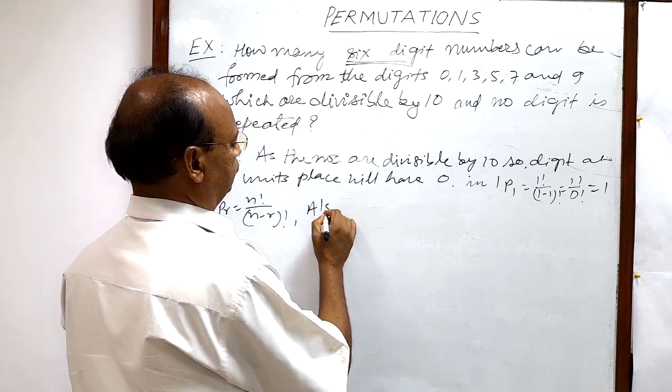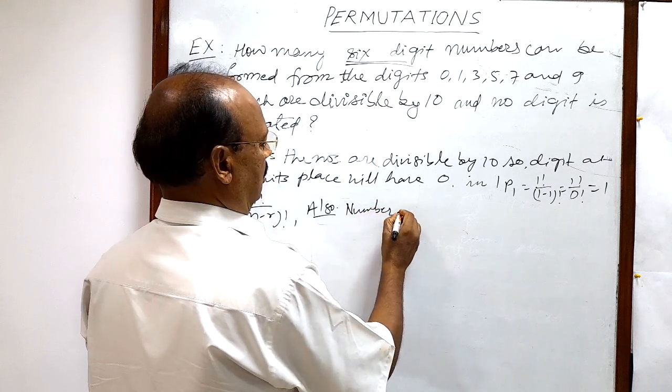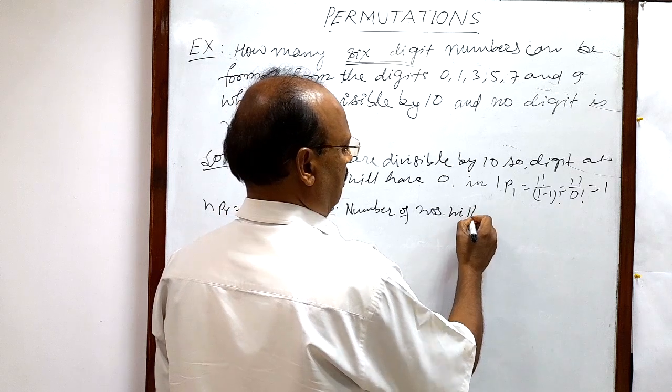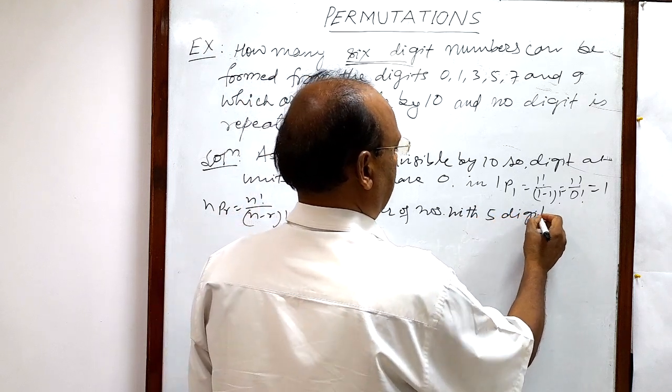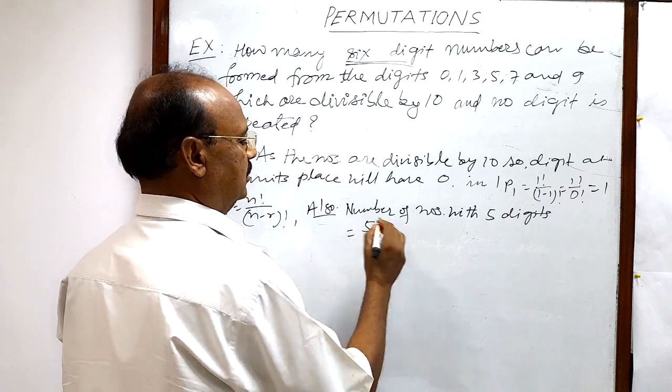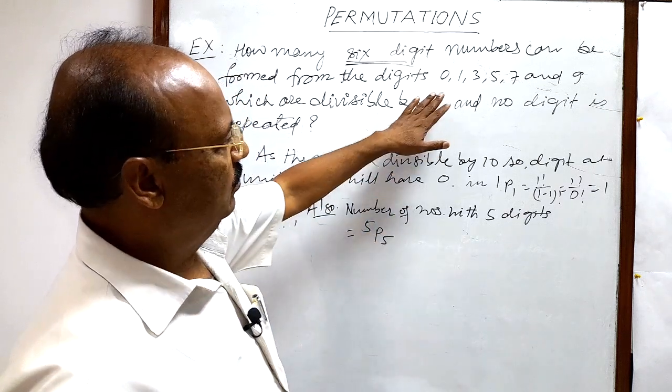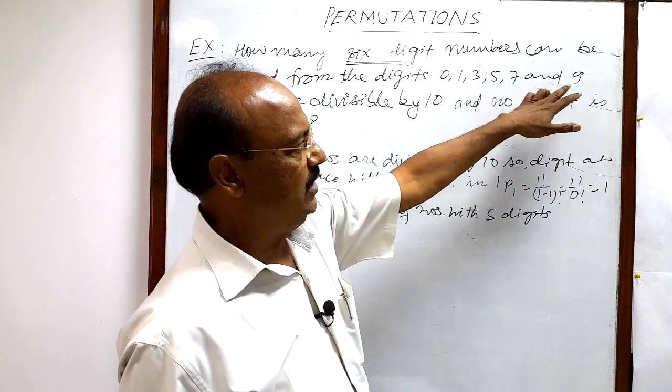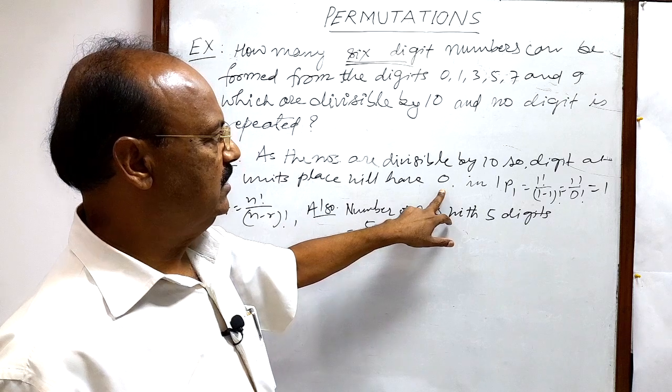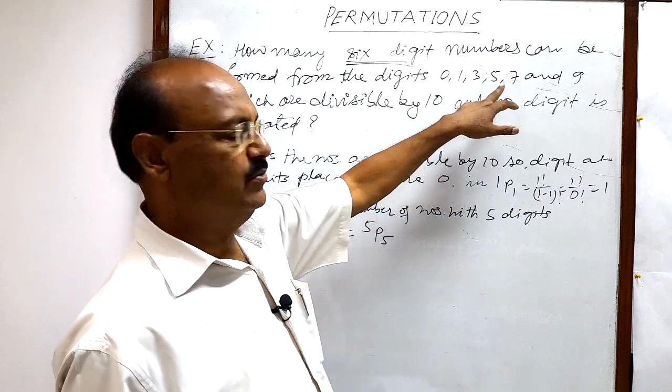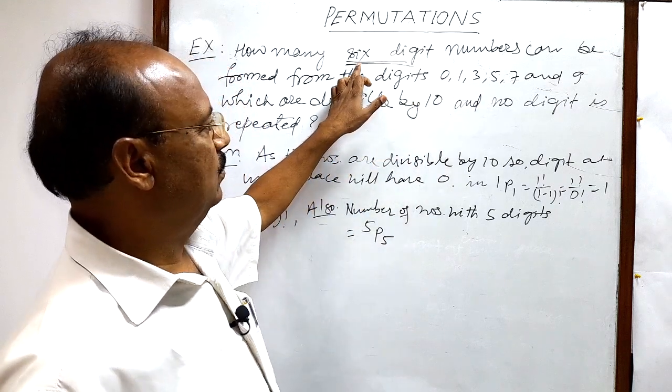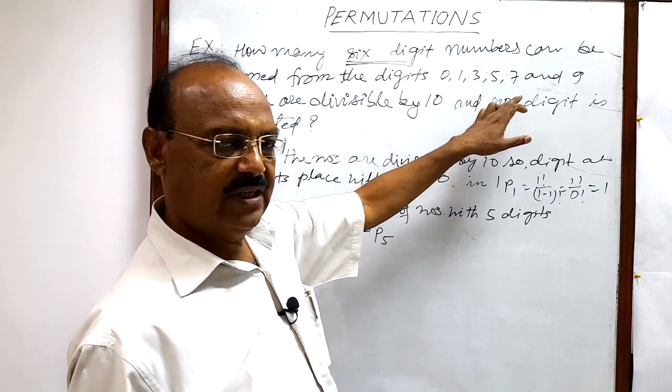The number of numbers with 5 digits will be 5P5. Total number of digits is 1, 2, 3, 4, 5, 6. One digit 0 has been already selected for units place, so the remaining digits will be 5, and 5 places are left because we have to form a 6-digit number and the digit at units place has been already selected. So remaining 5 places and 5 digits.